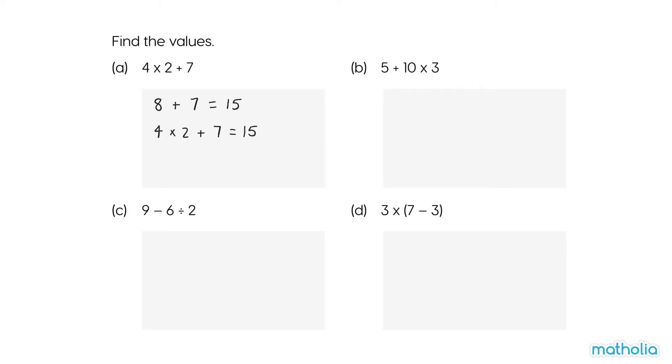B. 5 plus 10 times 3. Multiply first. 10 times 3 equals 30. 5 plus 30 equals 35. So, 5 plus 10 times 3 is 35.